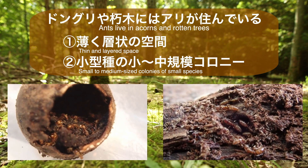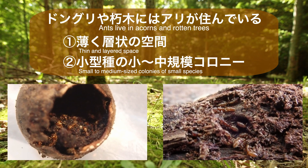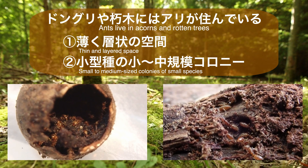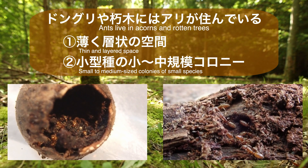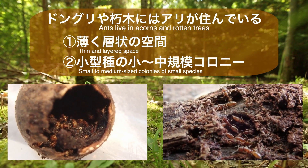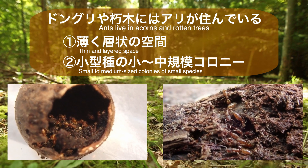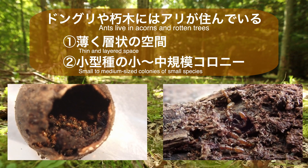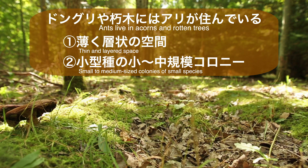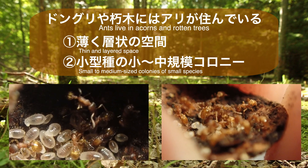アリの仲間は自然界の中で色々な場所に生息しています。アリの巣といえば土や木に作られているイメージが一般的ですが、中には古いどんぐりや朽ち木の中に巣を作るアリたちも存在します。彼らの巣の特徴は、どんぐりや朽ち木の内部構造に沿った薄く層状のスペースに巣が作られていること、住んでいるアリはあまりコロニー規模の大きくない小型のアリであることなどです。